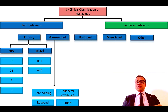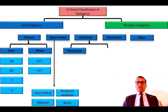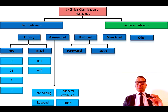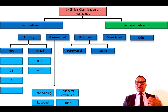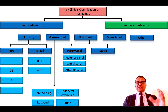The positional nystagmus could be either paroxysmal or static. During certain positions, for example a Dix-Hallpike maneuver, the nystagmus may last for a certain amount of time — this is called paroxysmal. Or the nystagmus could be without any fatigue, which is called static. The paroxysmal variety of jerk nystagmus is seen in pathologies of the posterior canal, lateral canal, and anterior canal.